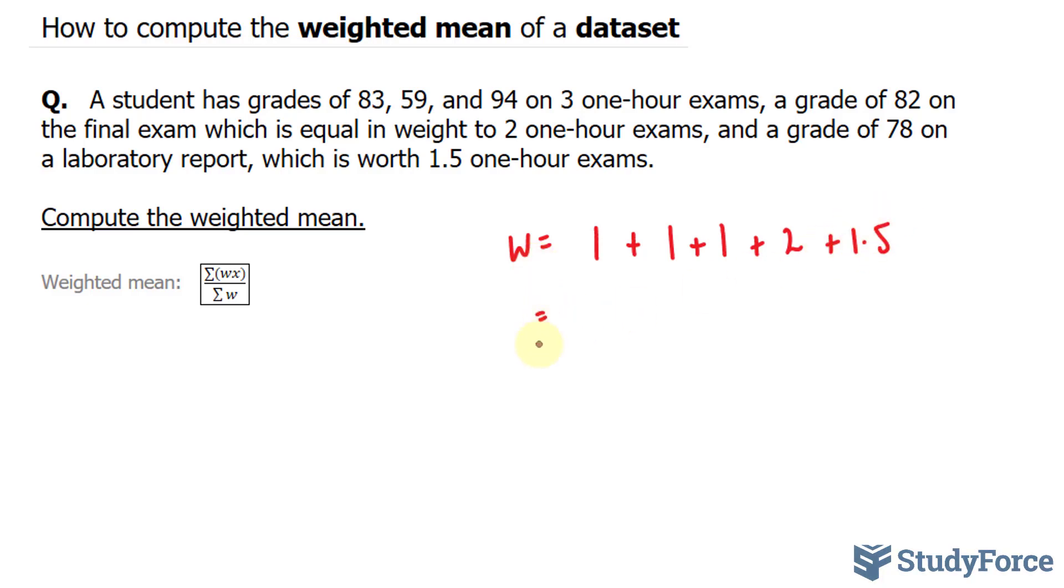The total weight here is one plus one plus one, plus two, that's five, plus 1.5 is 6.5. So we have effectively found the sum of the weights, the denominator.